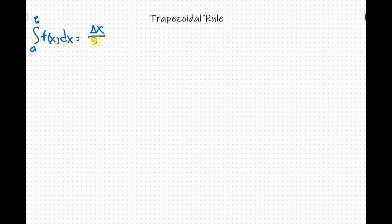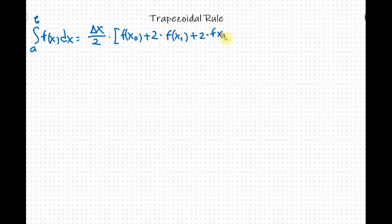You take delta x and divide it by 2 and then multiply by the sum of f of x sub 0 plus 2 times f of x sub 1 plus 2 times f of x sub 2, and you keep all those 2's until you get down to 2 times f of x n minus 1 plus f of x sub n.